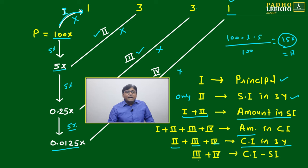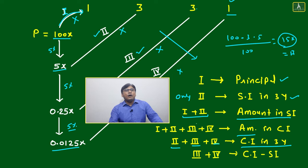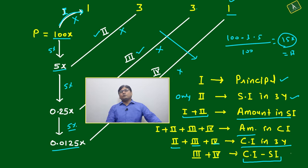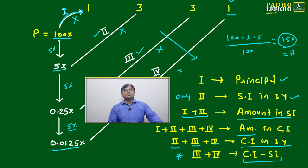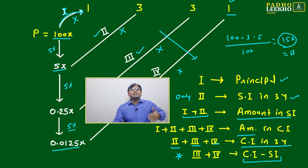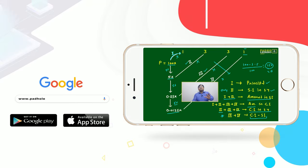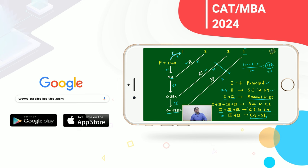If you remove Lines 1 and 2 and take only Line 3 onward, those lines will always give you the difference between compound interest and simple interest. That is the most useful result from Pascal's triangle. Mainly Lines 3 and 4 are sufficient, because further values become so small they don't affect the answer. So Lines 3 onward give you the CI minus SI difference.